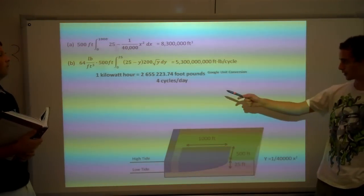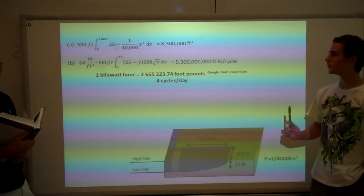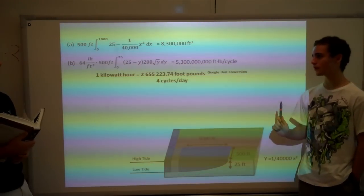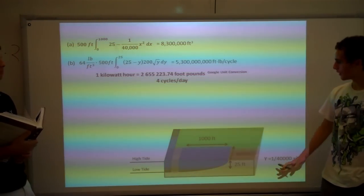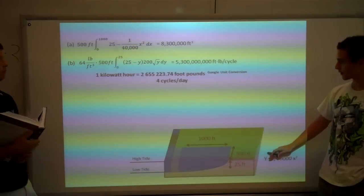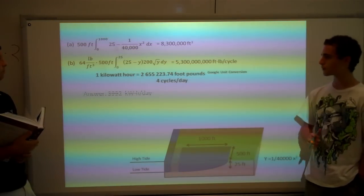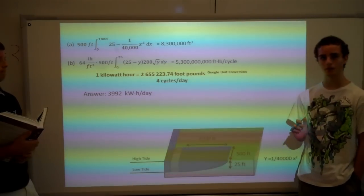And then, you want to convert this to kilowatt hours. So that's 2,655,223.74 foot-pounds per kilowatt hour. And then, by multiplying by four and dividing by that conversion factor, you're going to get 3,992 kilowatt hours per day.